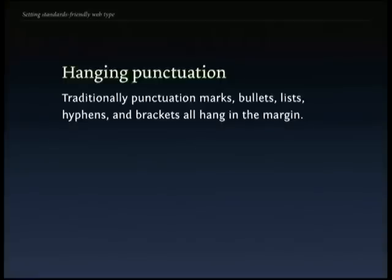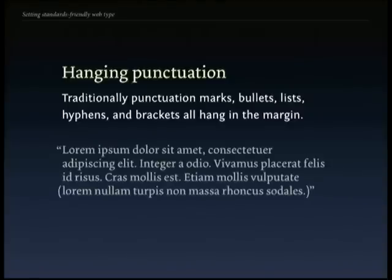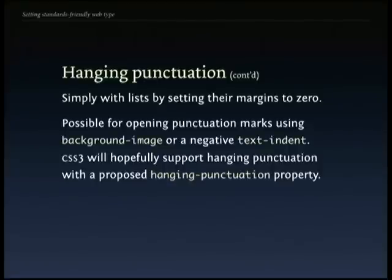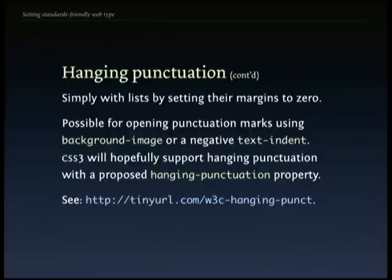Hang punctuation means bullets, lists, parentheses, and opening quotes hang into the margin. Good books do this. It's difficult to do consistently on the web right now — there is a CSS3 property in the works. You can do it with lists by setting margins to zero, and for opening quotation marks using a negative text-indent or a background image. There is a proposed CSS hanging-punctuation property specification.